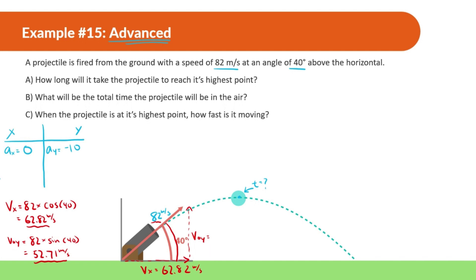Now I know at the beginning the velocity in the x direction is 62.82 and the initial velocity in the y direction is 52.71. But we're looking for the time it reaches the highest point, and we only have two pieces of information on both sides. At the highest point, the velocity in the y direction is going to be zero. So the final velocity in y is zero at the time we're looking for.